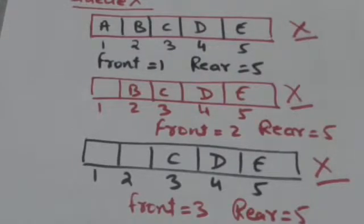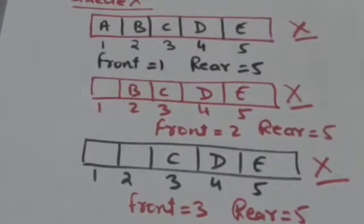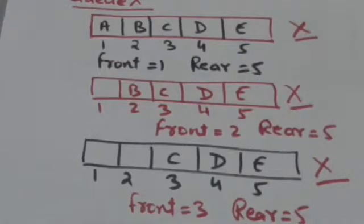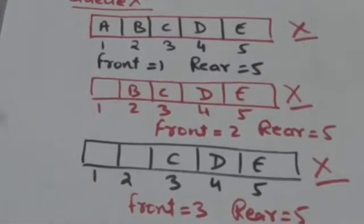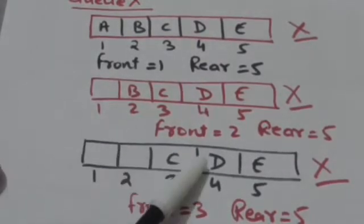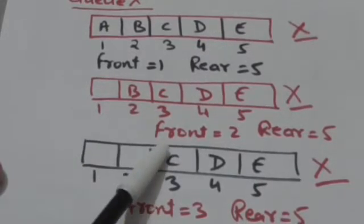Now suppose we have to insert an element F in this queue. We know that elements can be inserted only at the rear end. Since array X can hold only 5 elements and element E is stored at index 5, we cannot increase the value of rear by 1 and store element F after E in array X. The elements of the queue have occupied the last part of the array.